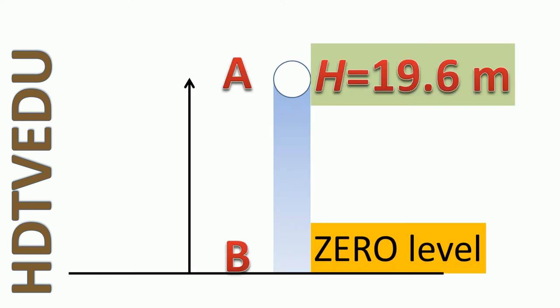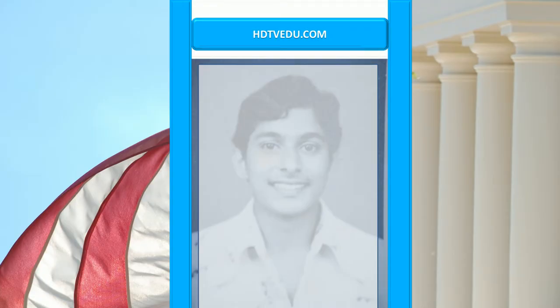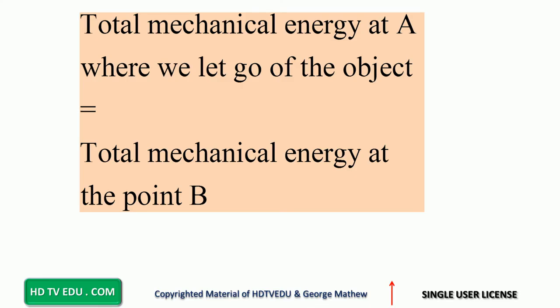Conservation of energy: we have point A which is 19.6 meters above point B, and we have established the zero level at point B. An object at rest is let go from point A at a vertical height of 19.6 meters. What is the speed of the object at B? Ignore frictional and rotational energies. Welcome to hdtvedu.com — direct and simple education in seconds.